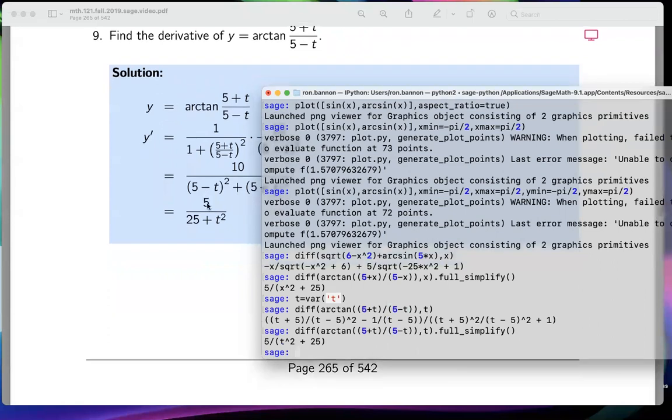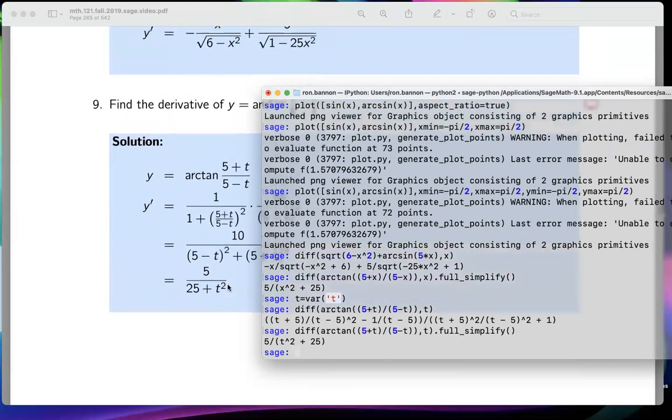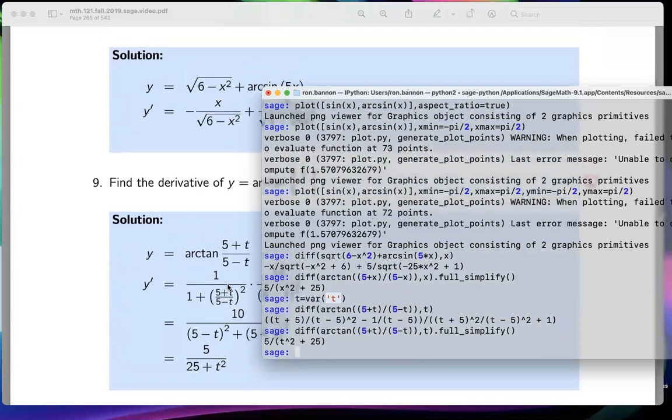I'm going to differentiate with respect to t now and what do I get? I guess something looks pretty complicated and I'm going to just do that full simplify - dot full simplify. And let's see what we get. And what do we get? We get the answer they got which is five divided by t squared plus 25. They might write it slightly different, that doesn't matter to me. You write the way you like to write it, it's an equivalent statement.